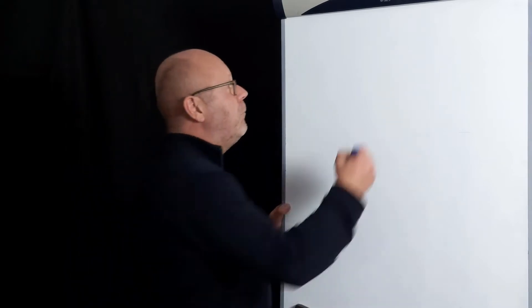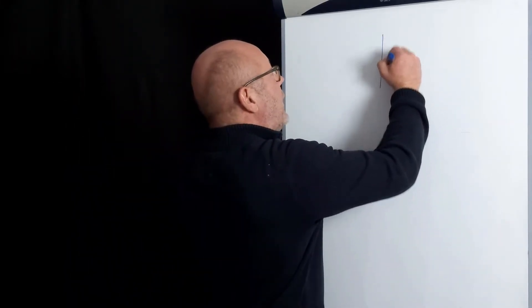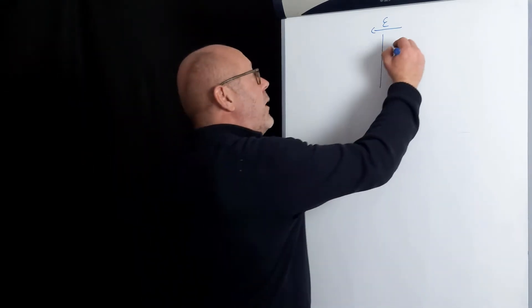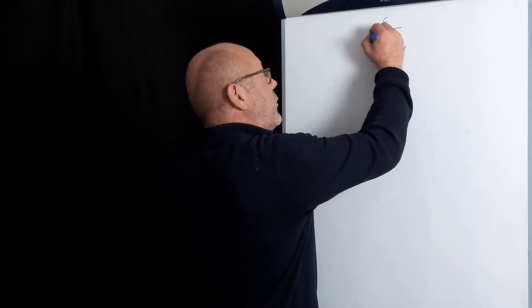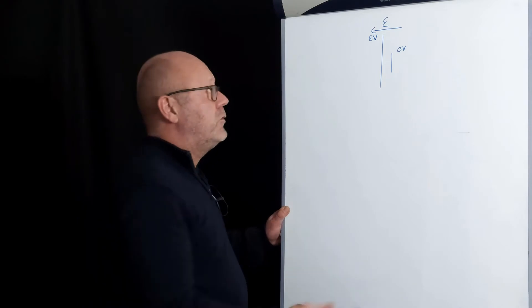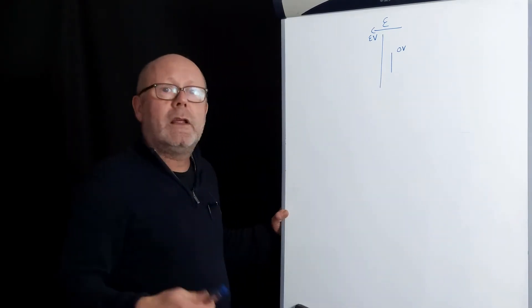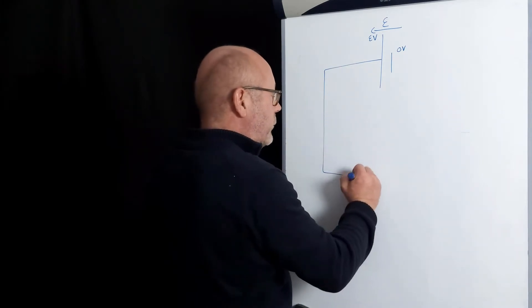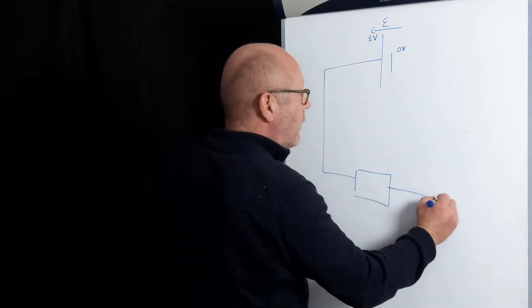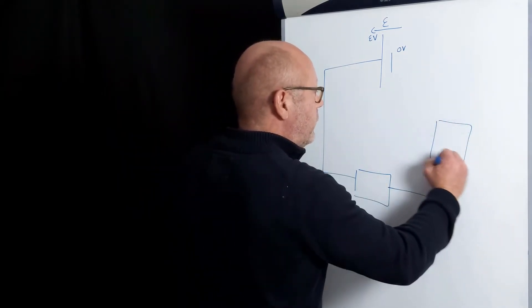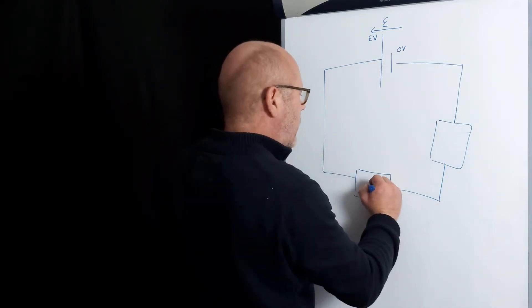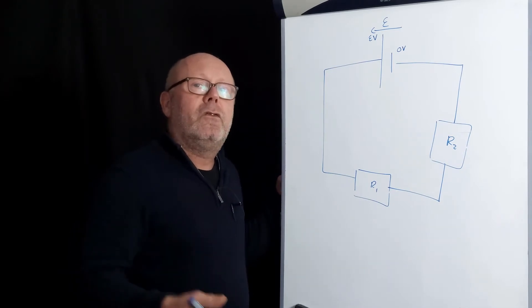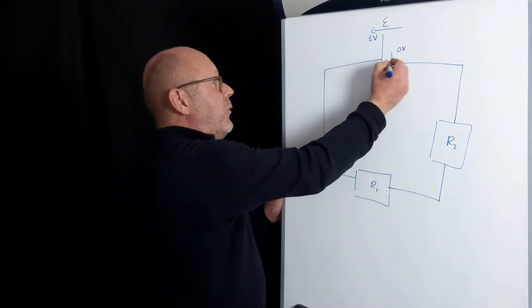Let's do it in a more formal way now. Again, let's draw a battery of EMF εV. Meaning that I would have 0V here and εV here. An equal of charge placed on this plate will hold εJ. Let's connect this to a resistor. Actually, to two resistors in series.